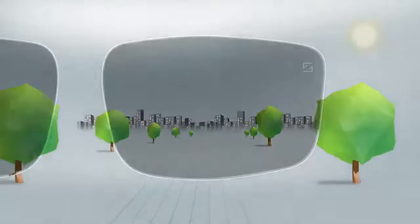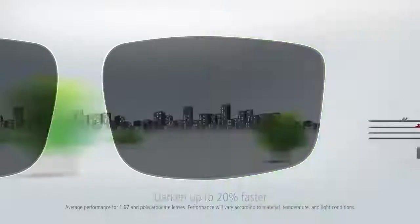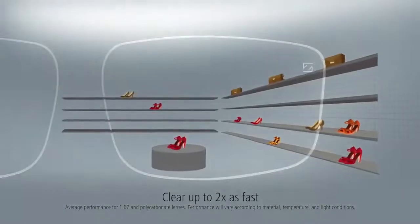Photo fusion lenses by Zeiss darken up to 20% faster than traditional lenses and clear again up to twice as fast.